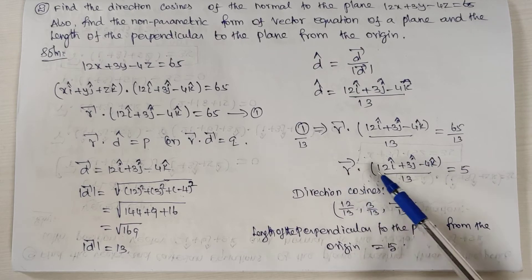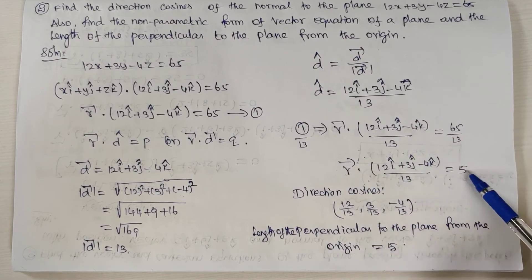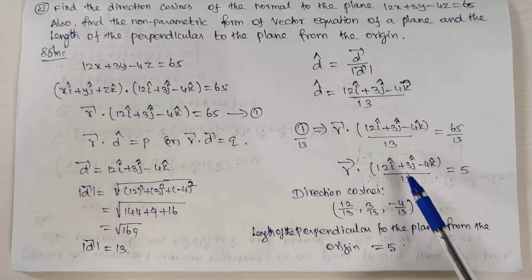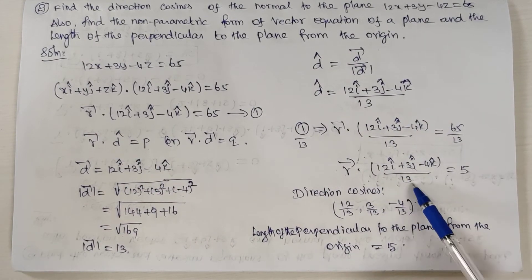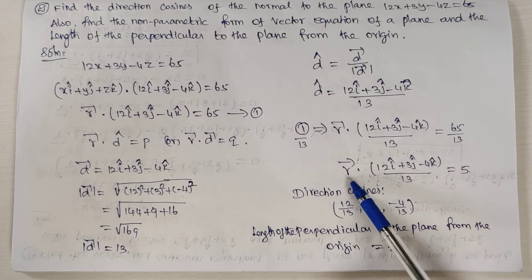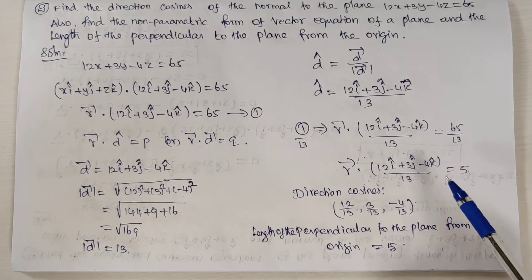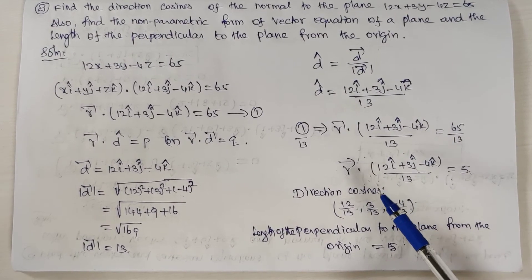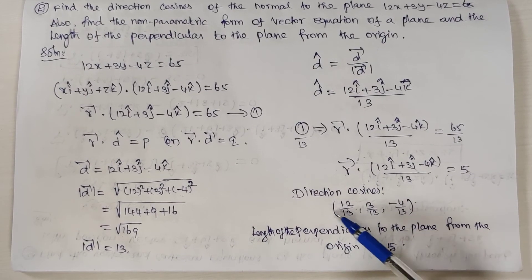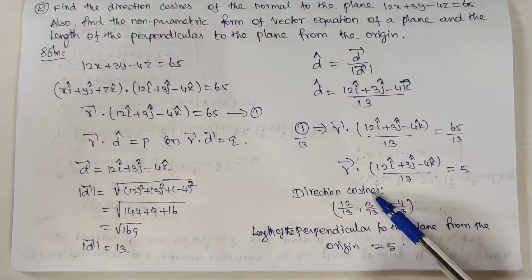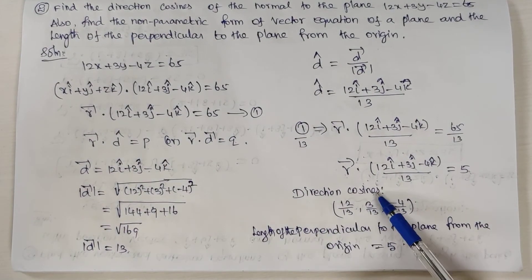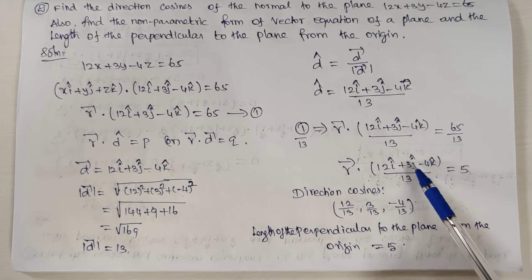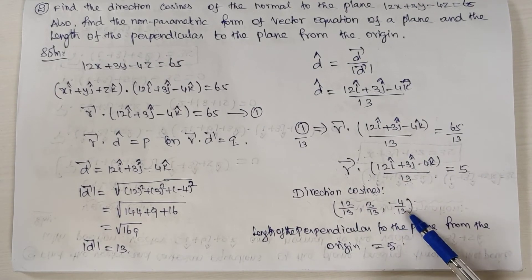This is the vector equation. Next, the direction cosines. The direction cosine formula gives l = x/r, m = y/r, n = z/r. So the direction cosines are 12/13, 3/13, and minus 4/13. This is the direction cosine of the normal to the plane.